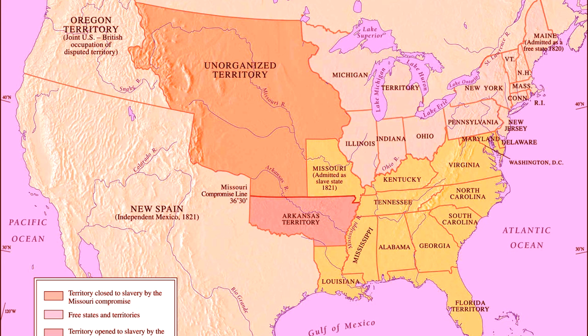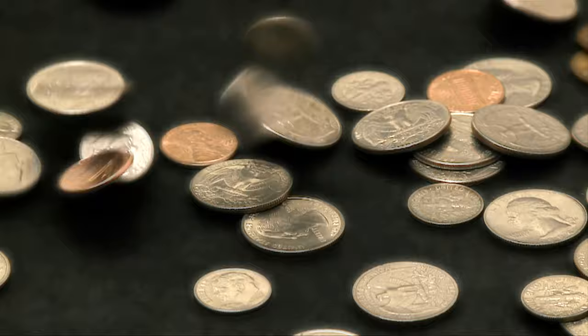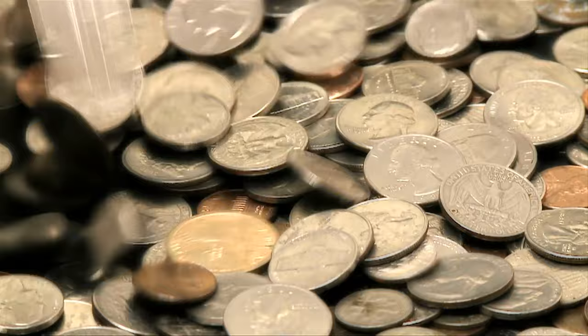The tensions surrounding sectionalism intensified with the nullification crisis of 1832. In the 1820s, the federal government placed protective tariffs on foreign goods. A tariff is a tax on foreign imported goods that make them more expensive, thus making domestic goods more attractive to consumers.